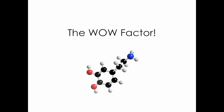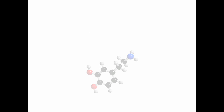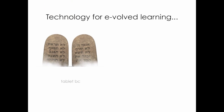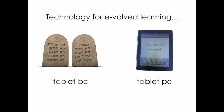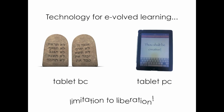Here we can see the chemical breakdown of dopamine. We want dopamine to be produced in their body, because one of the side effects of dopamine is increased memory retention. Here I've used a Tablet BC and Tablet PC joke to create something funny to make them laugh.